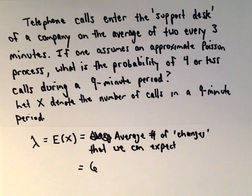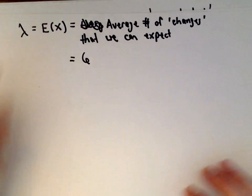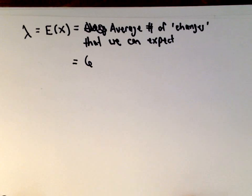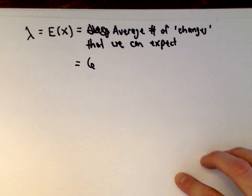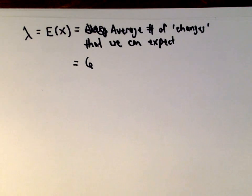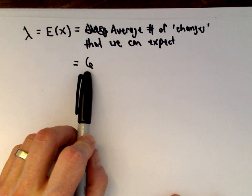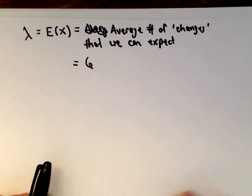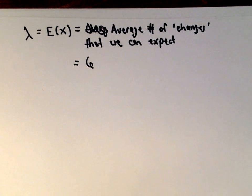So lambda equals six; we can expect six phone calls on average. This is where it gets a little counterintuitive — if you expect on average six phone calls, what do you think the probability of getting four or fewer calls would be? We'll solve that now.